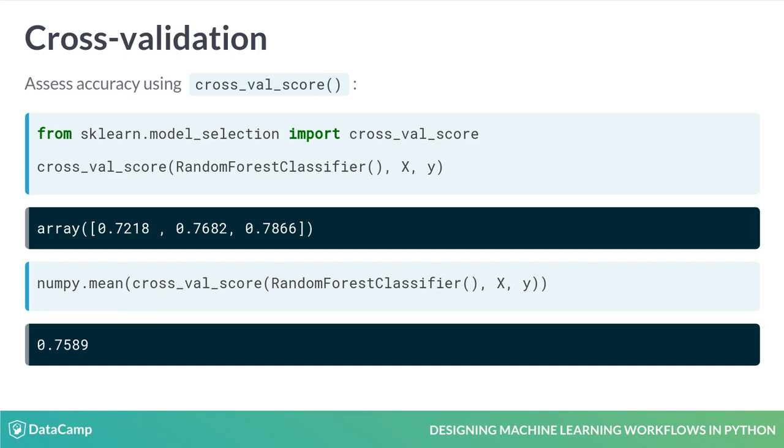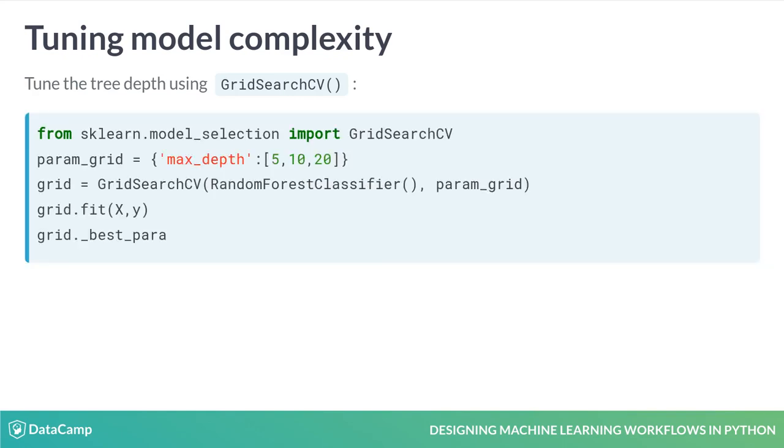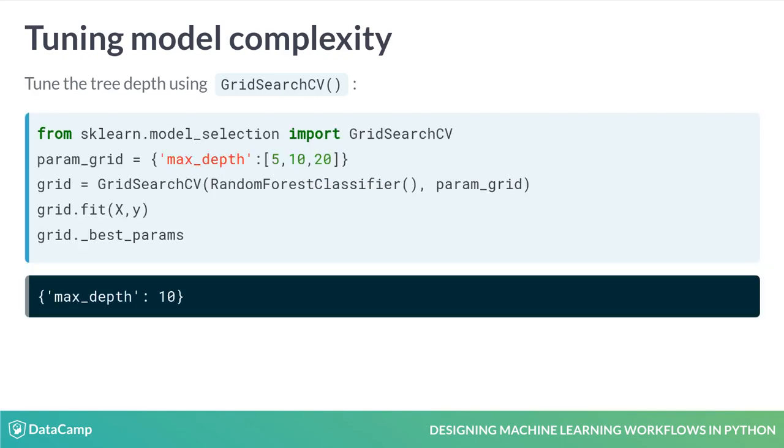To easily optimize a hyperparameter like tree depth using cross-validation, you can use the function GridSearchCV, which takes as input a dictionary of parameters and values to try out, and a classifier instance. The resulting object is fitted to the entire dataset and stores the best-performing values in an attribute called _best_params.